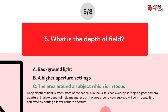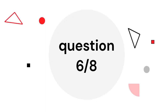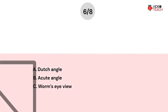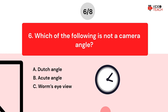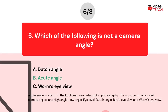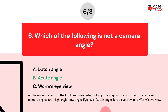Shallow depth of field means less of the area around your subject will be in focus. It is achieved by setting a lower camera aperture. Question number six. Which of the following is not a camera angle? Option A: Dutch angle. Option B: Acute angle. Option C: Worm's eye view. The correct answer is Option B. Acute angle is a term in Euclidean geometry, not in photography. The most commonly used camera angles are high angle, low angle, eye level, Dutch angle, bird's eye view, and worm's eye view.